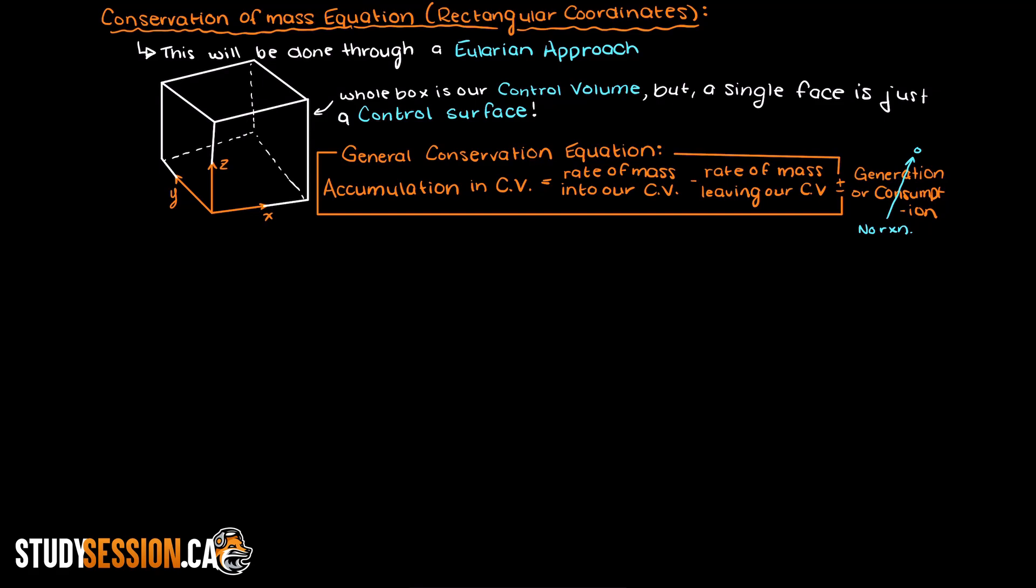So the only way we are going to have accumulation in this control volume is if the mass coming into our control volume is greater than the mass leaving our control volume. And this should make sense, right? Alright, let's look at the mass entering our control surface at y1.